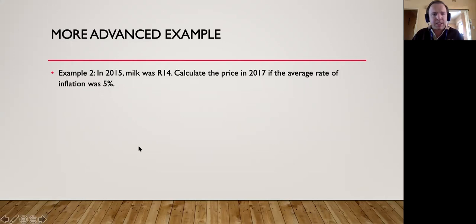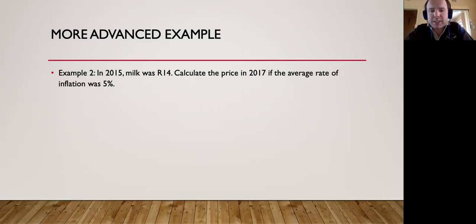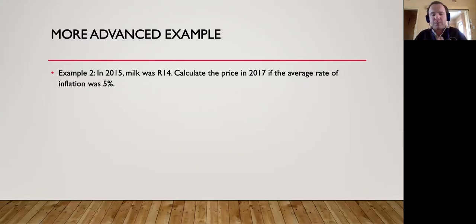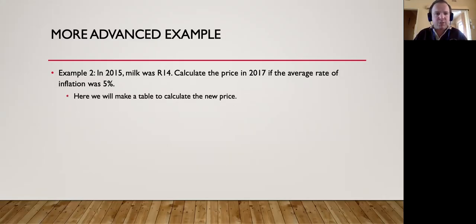An example that normally comes up in exams is as follows: In 2015 milk is R14. What would the price be in 2017 if the average rate of inflation is five percent? What we do here is work out the price in 2016 and then the price in 2017 — that is, we need to calculate the price for each single year from 2015 to 2017.